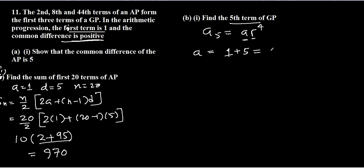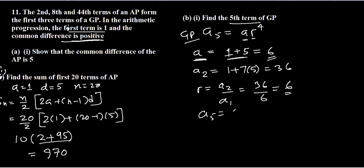D we know is 5, so a is 6 for GP. The second term was 1 plus 7D, which is 7 times 5, which is 36. So a is 6 and we can find r also. r will be a2 divided by a1, which is 36 divided by 6, which is 6. So now the value of a5 will be a, which is 6, and r, which is also 6 to the power 4. That comes out to be 6 to the power 5, which equals 7776.